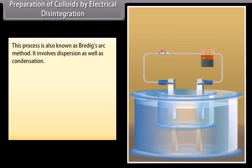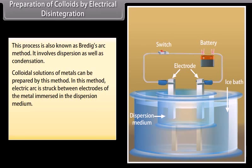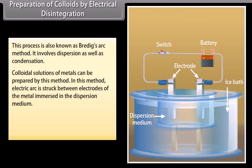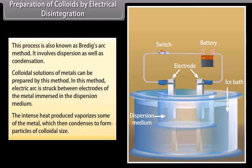Preparation of colloids by electrical disintegration (Bredig's arc method): This process involves both dispersion and condensation. Colloidal solutions of metals can be prepared by this method — an electric arc is struck between electrodes of the metal immersed in the dispersion medium. The intense heat produced vaporizes some of the metal, which then condenses to form particles of colloidal size.